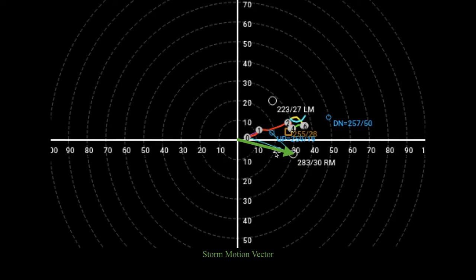Now to get what's referred to as the storm relative motion vector, you draw a line connecting this open circle to a particular point on the hodograph. Here I'm going to be using the altitudes of 1 kilometer and 2 kilometers to illustrate this, represented by these light blue arrows. By storm relative motion, that's basically what the ambient field looks like with the storm's motion subtracted out. For example, if a storm is moving due east at 50 miles per hour and you're driving east at 20 mph, from the storm's perspective you're moving east at around 30 miles per hour. That's what we mean by storm relative motion.